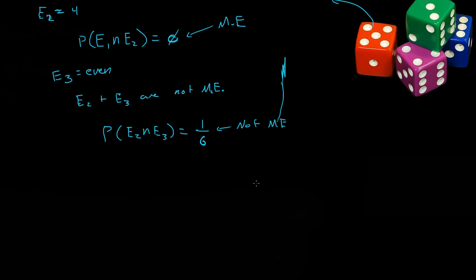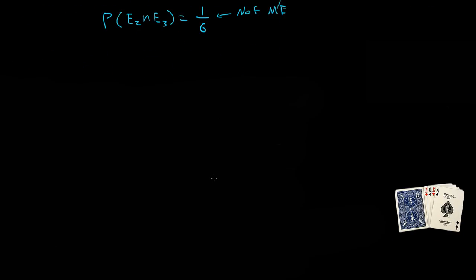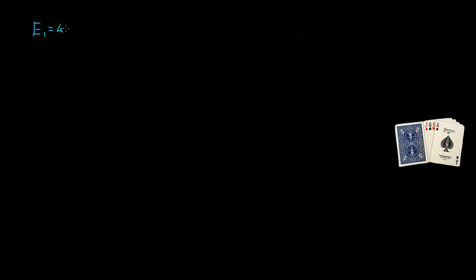So let's do that for our deck of cards. If Event 1 is getting a king, Event 2 is getting an ace, and Event 3 is getting a red card.